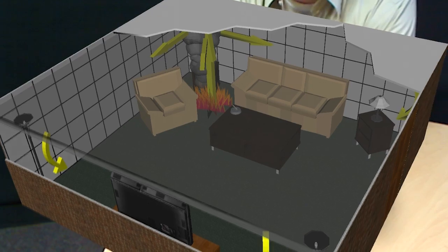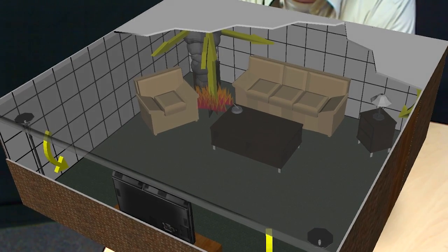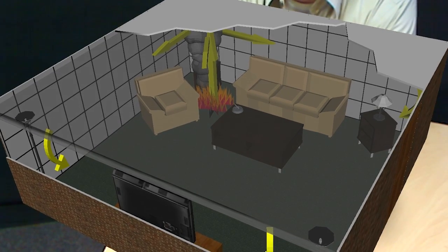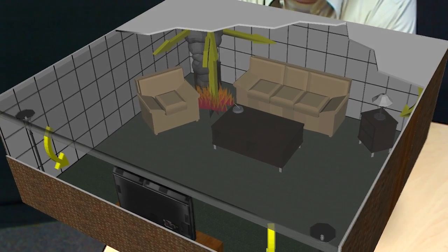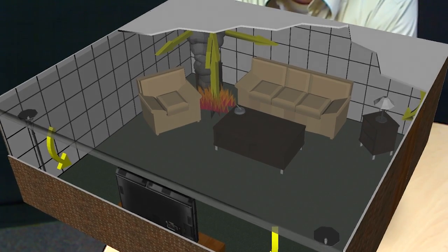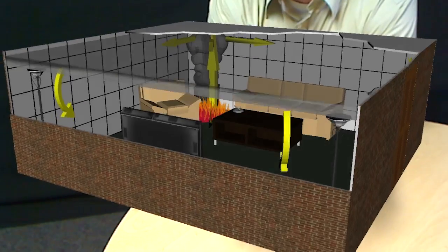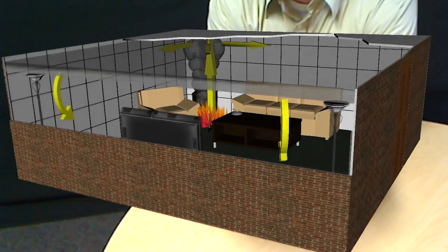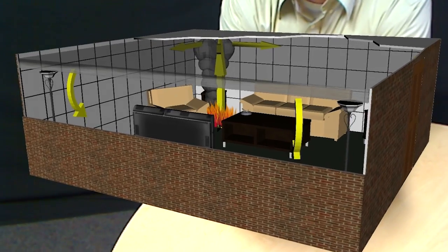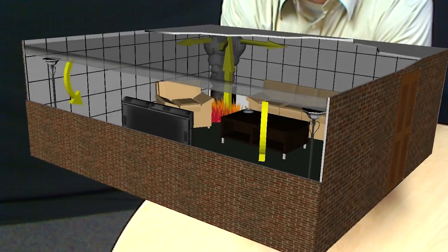So now the flames have gotten larger. They've spread and started involving more fuels. As it spreads and more combustion is taking place, more and more smoke is developing and rising up in the thermal column. As that thermal column starts to interact with the walls, we start to see the redirection again of that ceiling jet. And those ceiling jets are sometimes referred to as wall jets, represented here by the curved arrows.